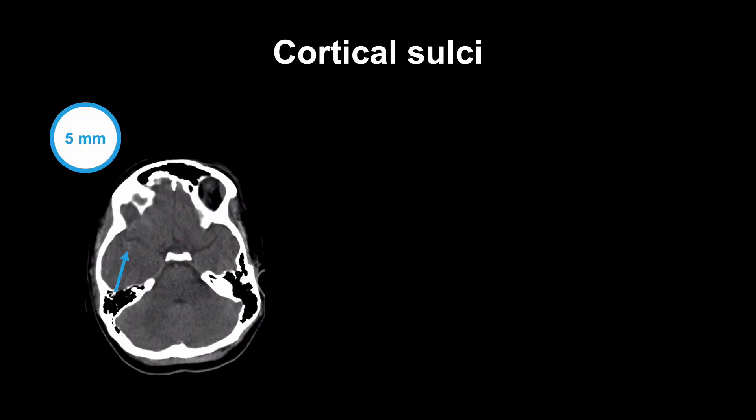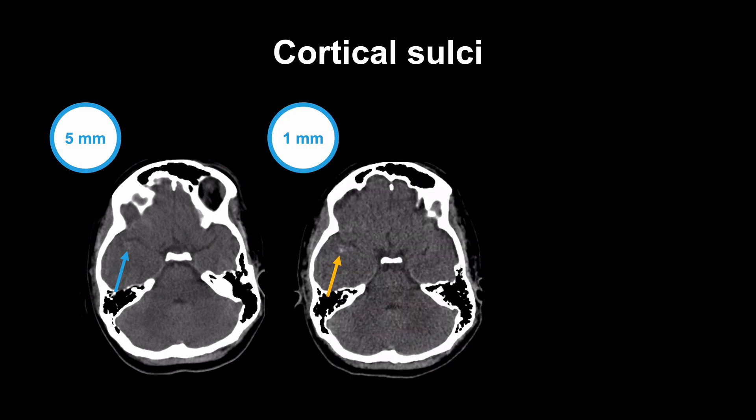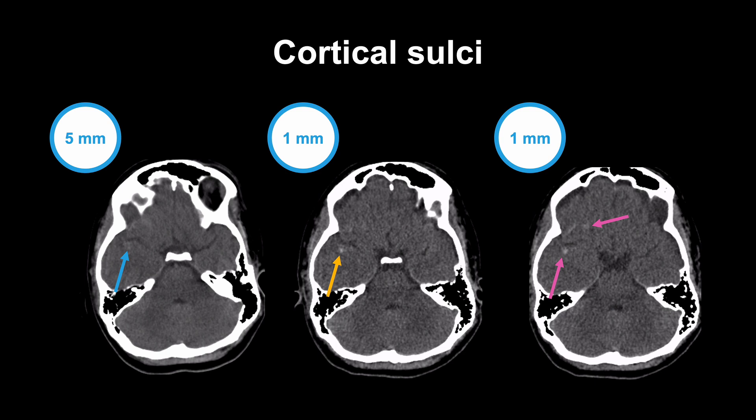Notice how much easier it is to see the small subarachnoid hemorrhage in this case when you look at the 1 mm reconstructions of the same dataset. The image on your left is the usual 5 mm reconstructions and while that is standard at many sites, it can make the high attenuation of a small subarachnoid hemorrhage less apparent than thinner sections. The middle and right images are both 1 mm reconstructions of the same data and both more clearly demonstrate the subarachnoid hemorrhage.